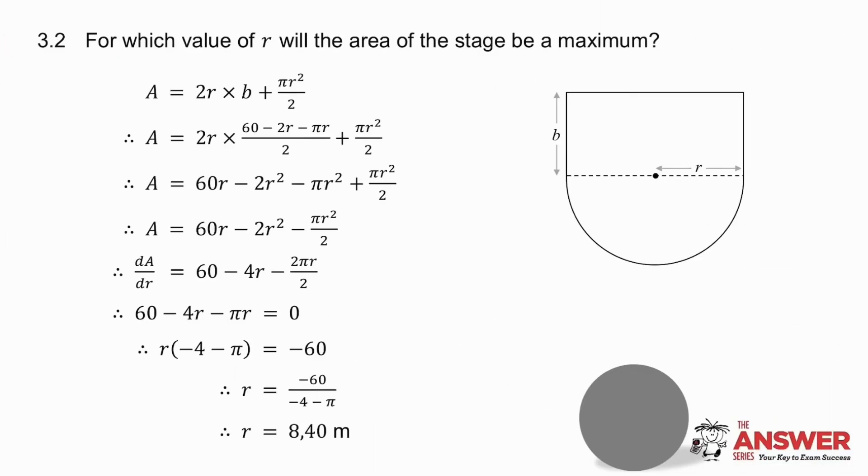3.2 says for which value of r will the area of the stage be a maximum. So what I need to do is get the area of the stage. Now the stage consists of a rectangle—the area of a rectangle is length times breadth, so it's 2r times b—plus the area of a semicircle. Formula for area of a circle is πr², so the semicircle is πr² divided by 2.